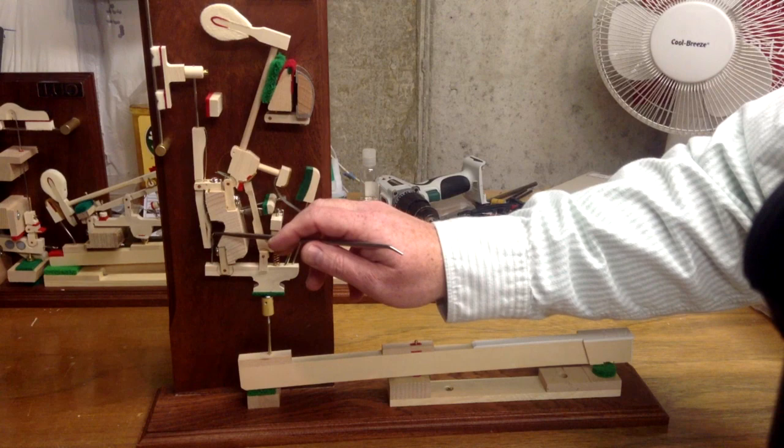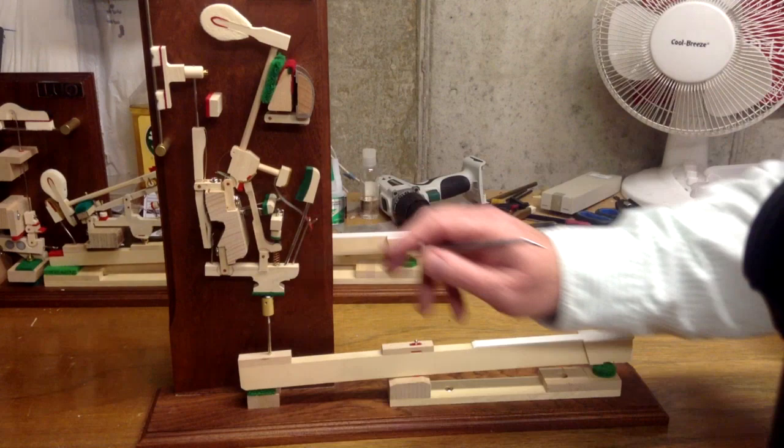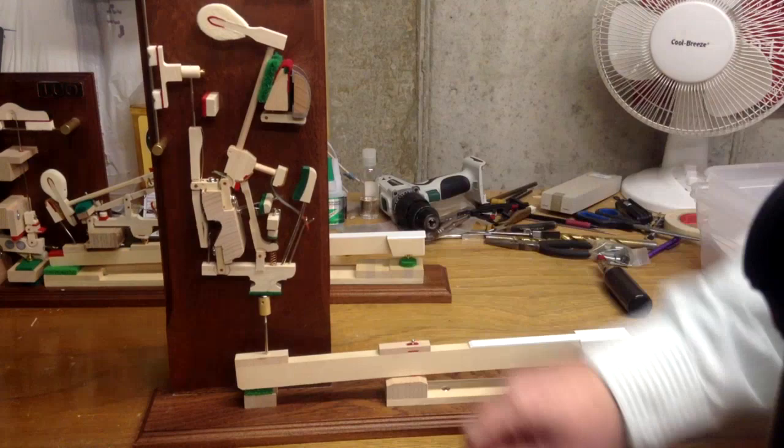You've got the damper spoon, damper flange, damper head, and damper felt. Then of course, here is your damper spring. I don't know if you can see that in the video, but there's a spring there that pushes on the damper so that there's some tension to push the damper back against the wire.